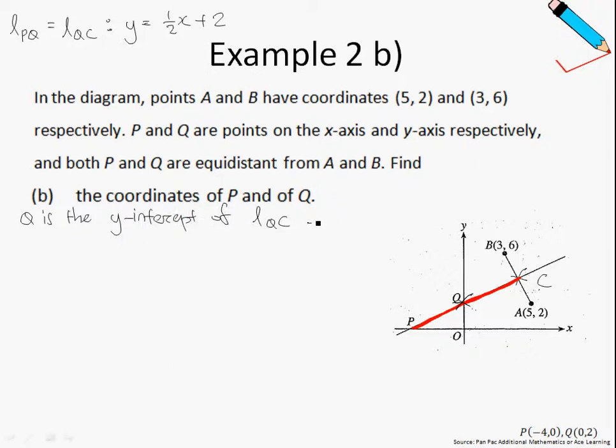If Q is the Y-intercept, then let us observe from the equation of the line that the Y-intercept is just 2, and we all know that for the Y-intercept our X-coordinate is always 0. So therefore just purely by observation, coordinates of Q is just (0, 2).